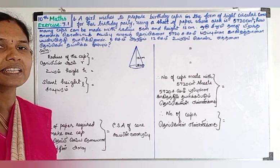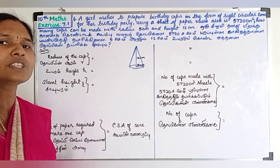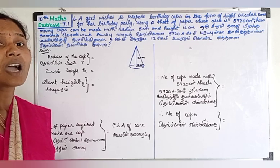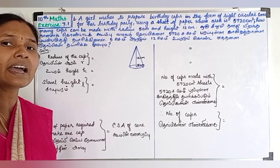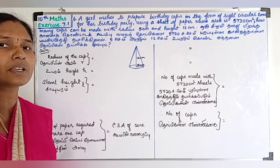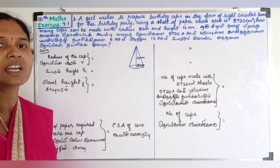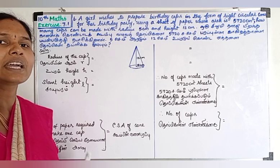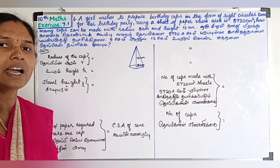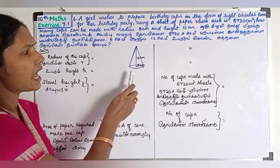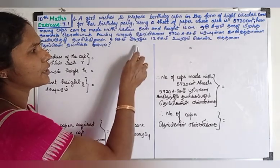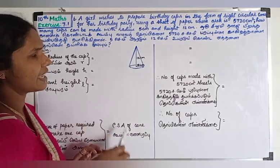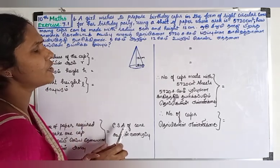The caps are cone-shaped. We are using a sheet of paper. The sheet area is 5720 cm². How many cone caps can be made? The cap has radius 5 cm and height 15 cm.